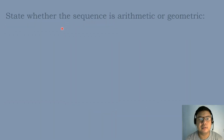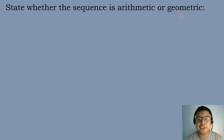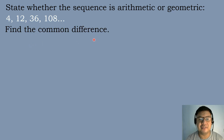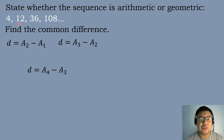Let's have our first example: state whether the sequence is arithmetic or geometric. We have 4, 12, 36, and 108. To identify the type, we will solve for the common difference or the common ratio. Let's find the common difference first using the formula: D equals the second term minus the first term, D equals the third term minus the second term, and D equals the fourth term minus the third term. We will substitute the corresponding values.